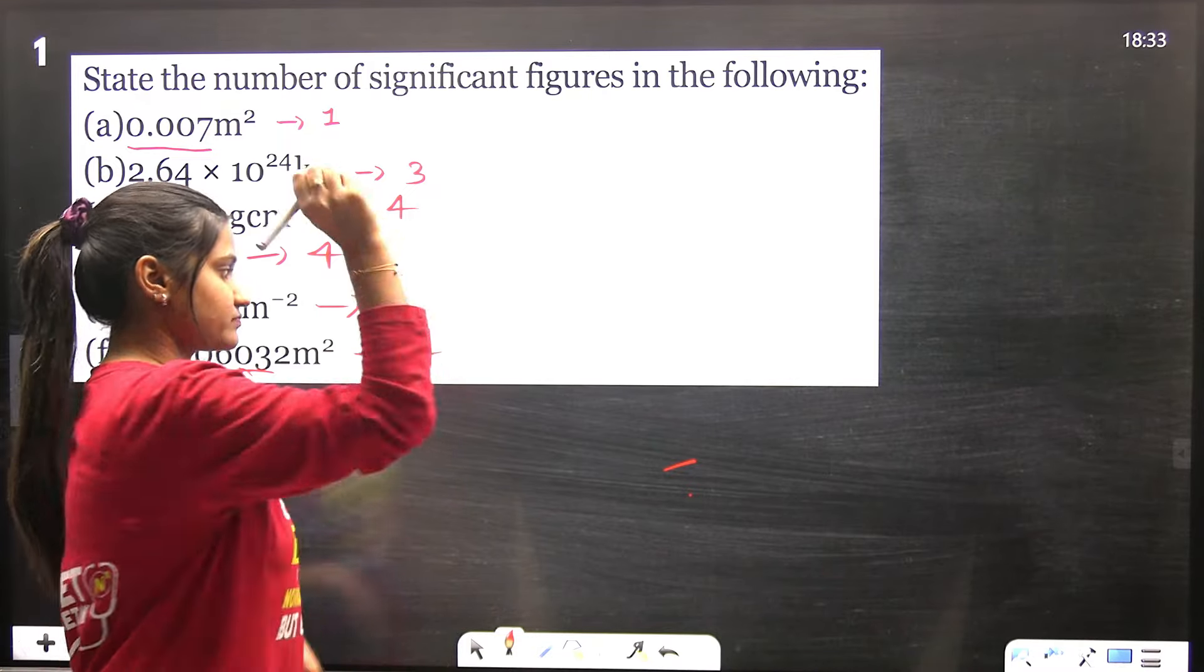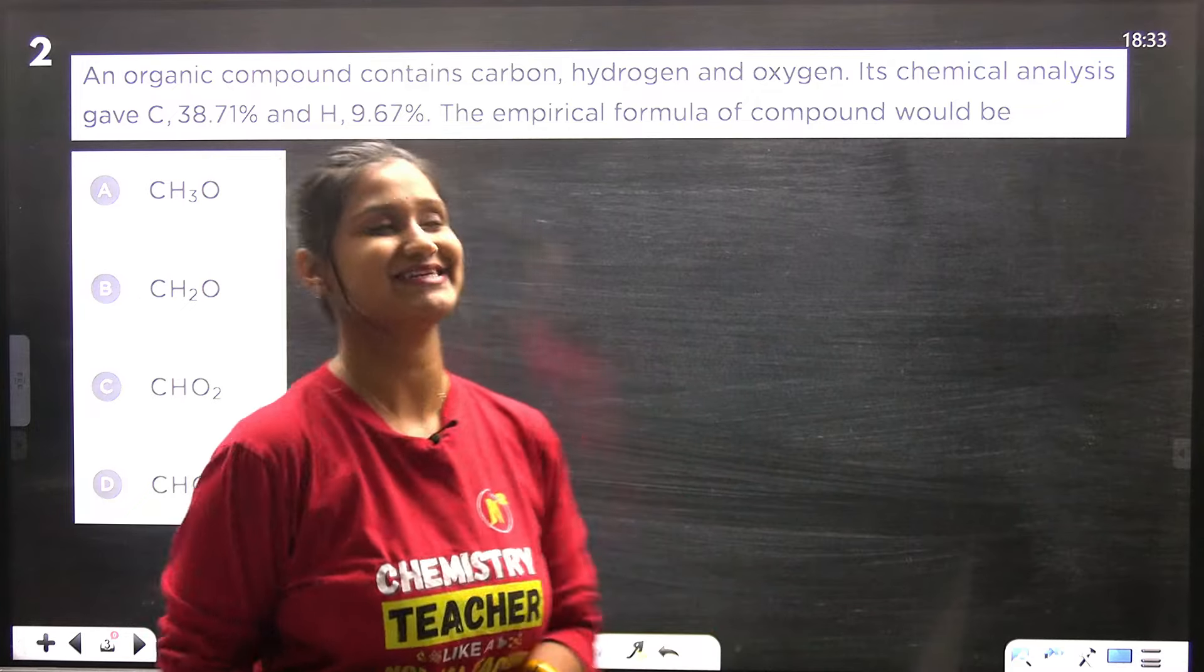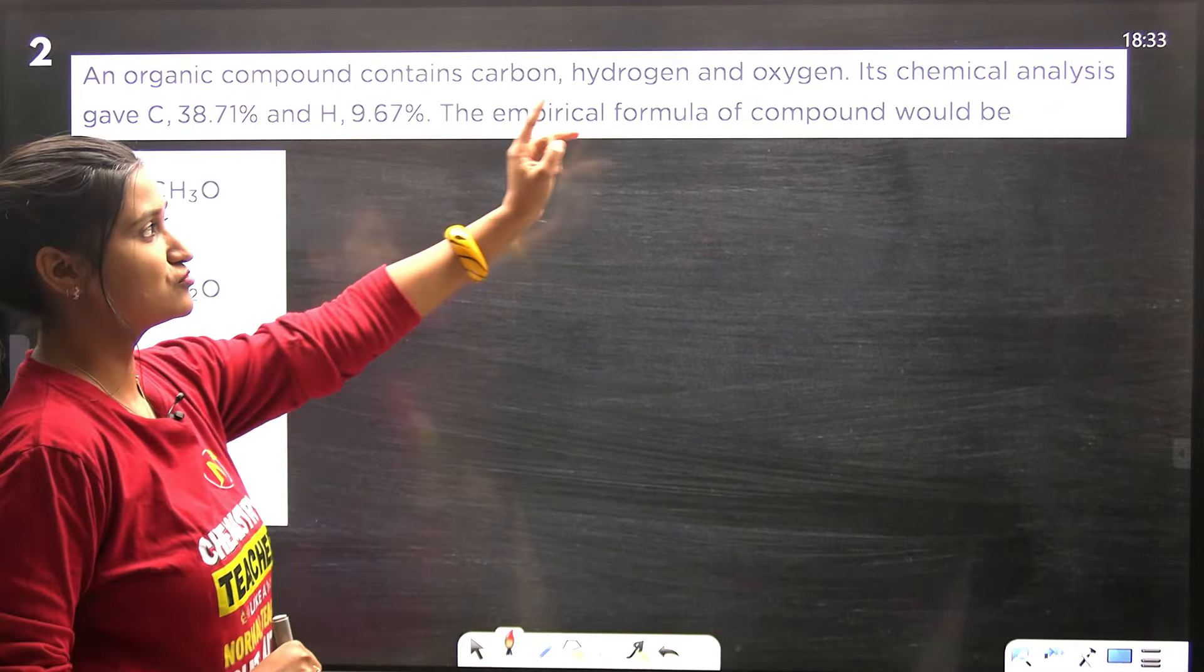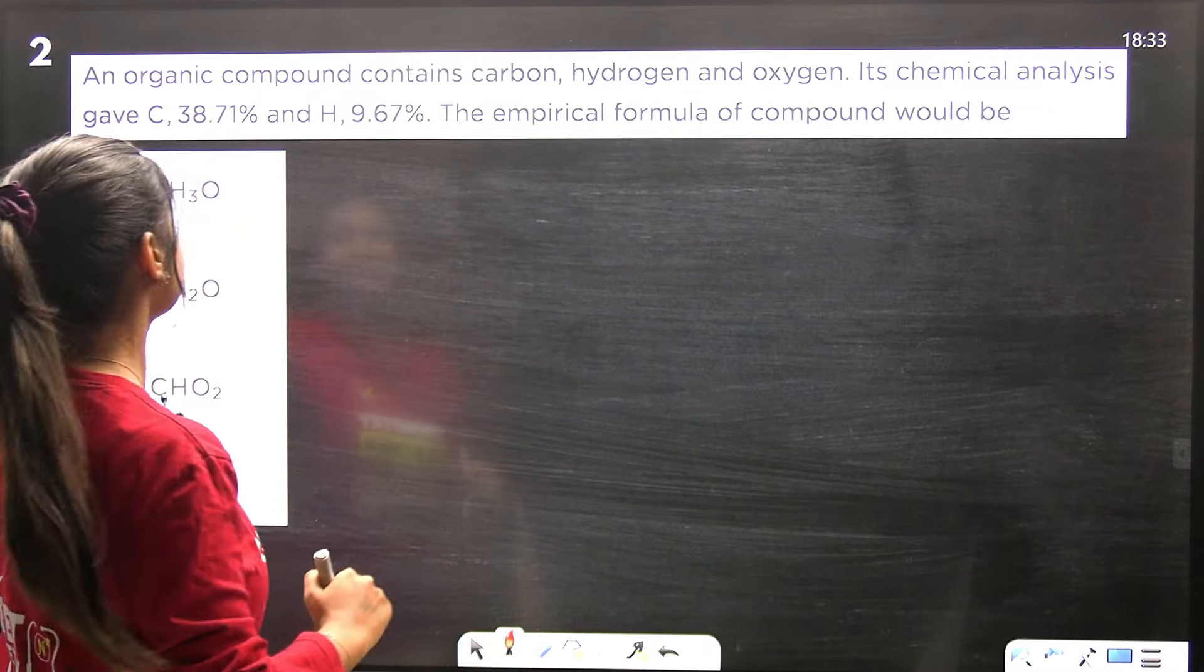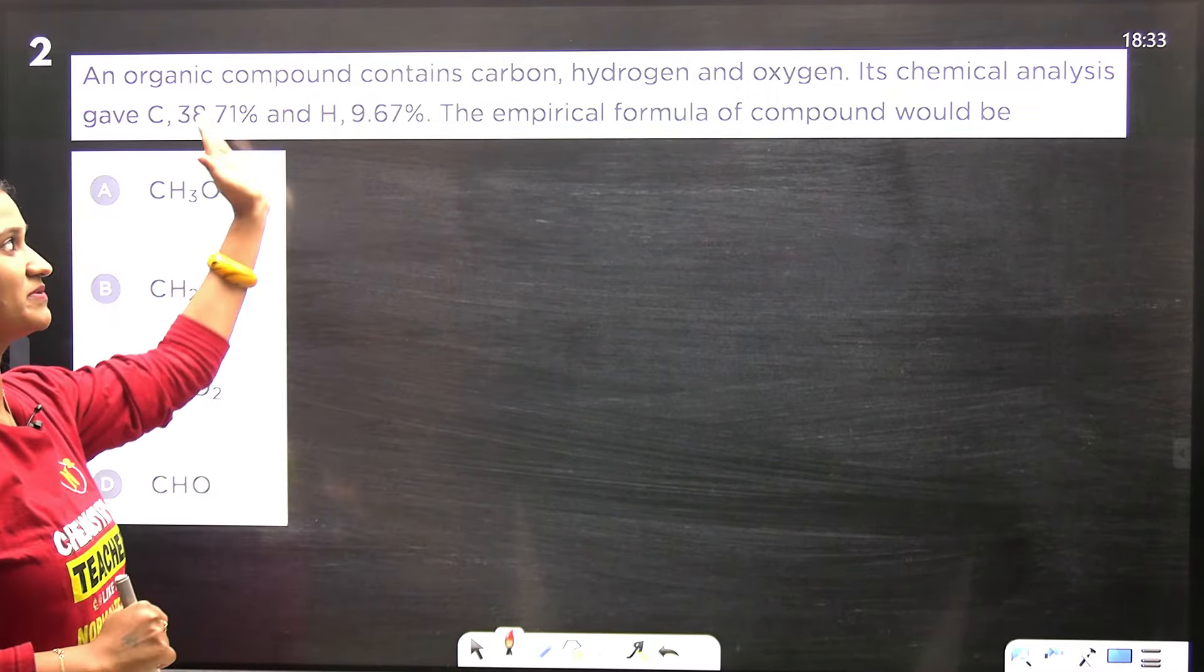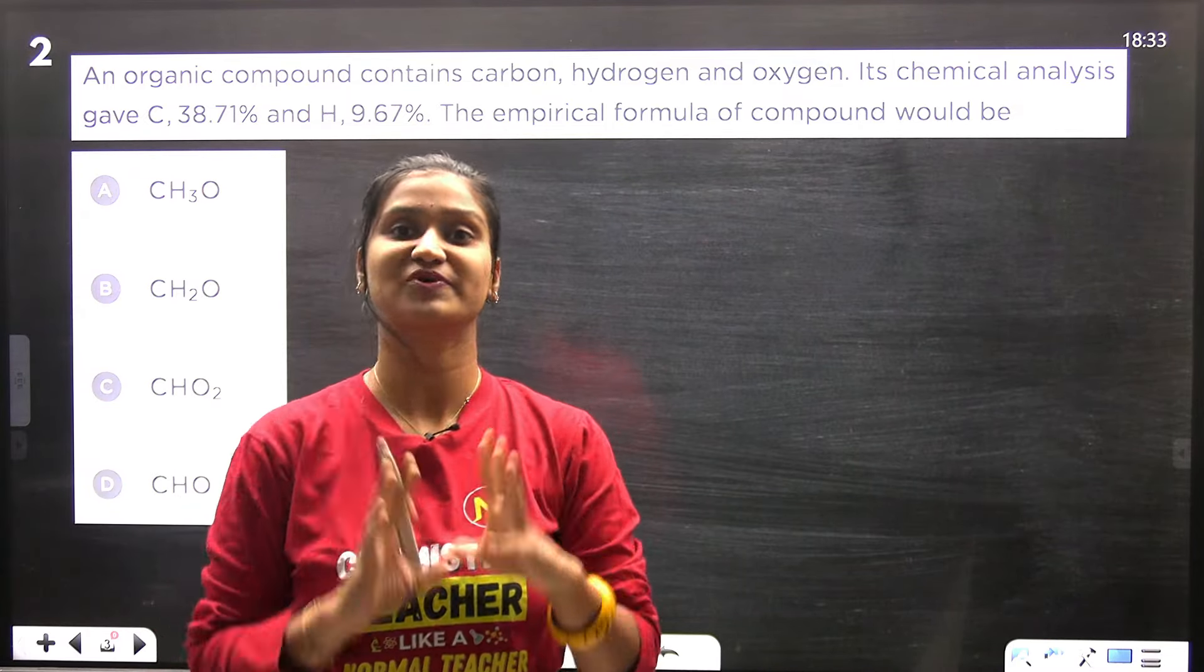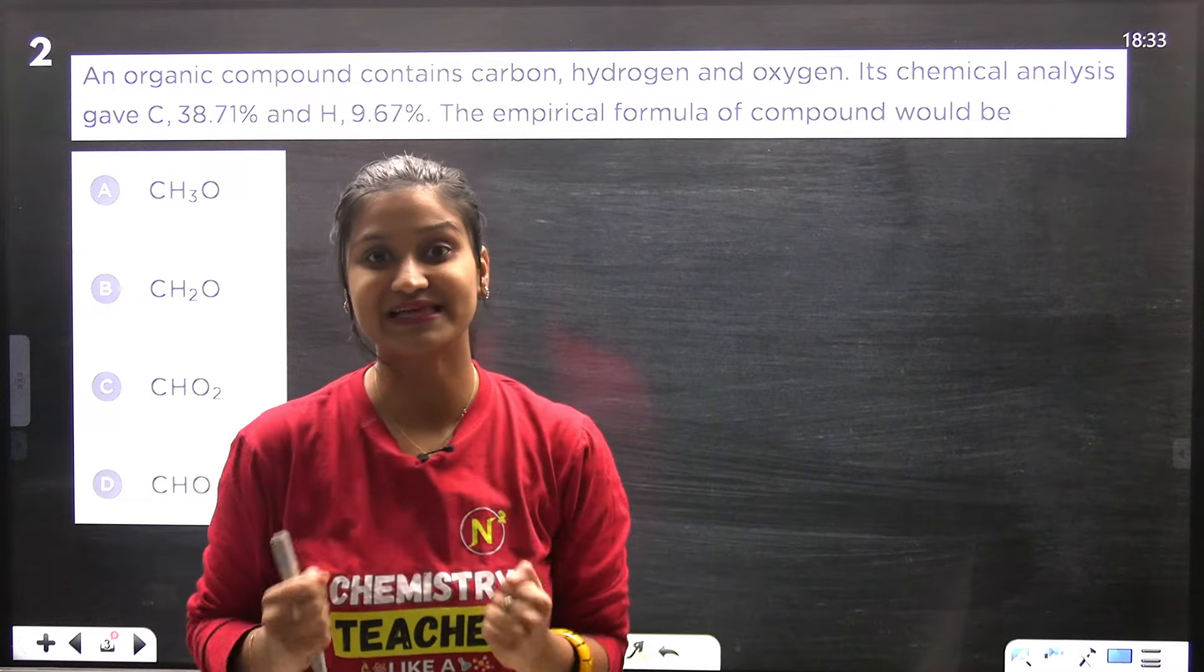Let's move ahead to the next question. An organic compound contains carbon, hydrogen and oxygen. From its chemical analysis we know the percentages, and we have to find its empirical formula. Empirical formula means the simplest ratio of elements in a compound.